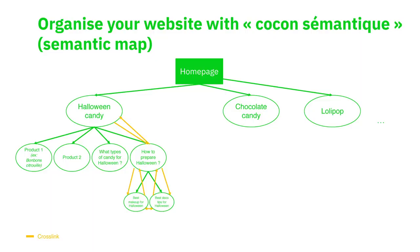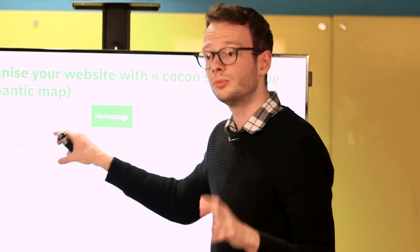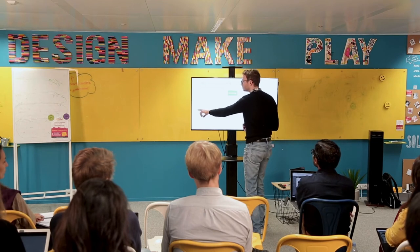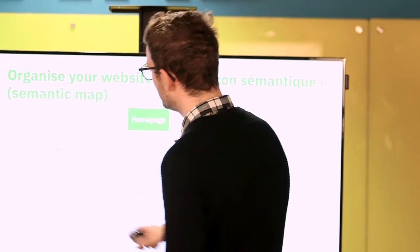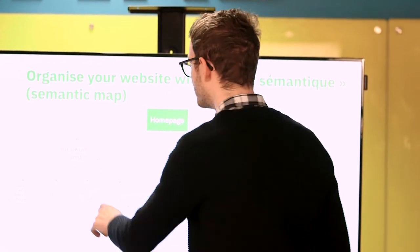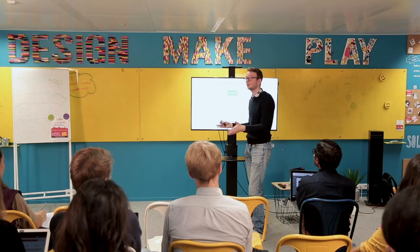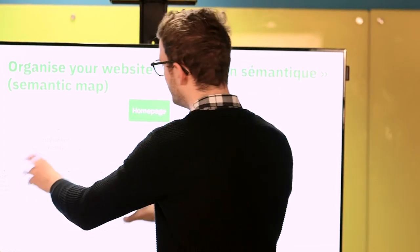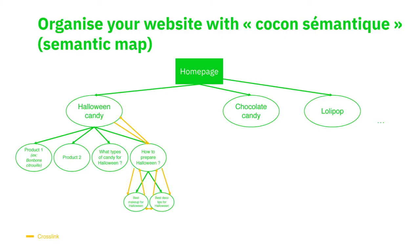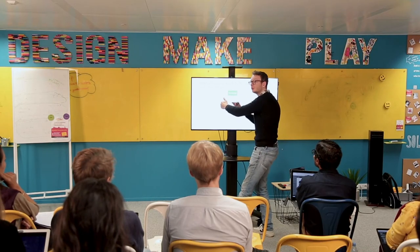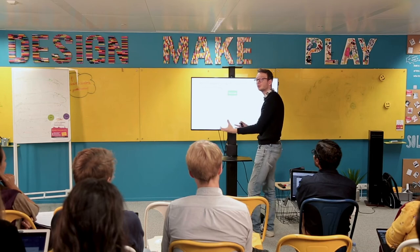We are a candy store, so there is a home page. Then a Halloween candy page — this is the page we really want people to go to. We can list the different products we have, but what could also be interesting is to develop content around big questions users have, for instance: what types of candy for Halloween? We can make a page around this type of keyword, and also how to prepare Halloween. All of these pages talk about different themes, and the more you go deeper, the more you detail around the keywords you are targeting.